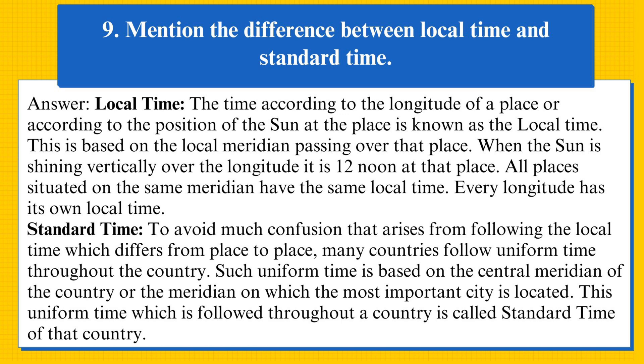Mention the difference between local time and standard time. Local time: the time according to the longitude of a place, or according to the position of the sun at the place, is known as local time. This is based on the local meridian passing over that place. When the sun is shining vertically over the longitude, it is 12 noon at that place. All places situated on the same meridian have the same local time. Every longitude has its own local time.